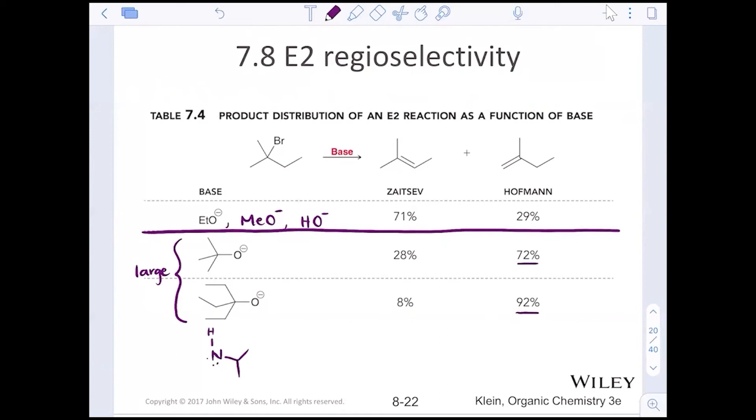Nitrogens, very common one, diisopropyl amine, or triethylamine. Those are also Hoffman bases. They would favor the less substituted alkene to be produced.